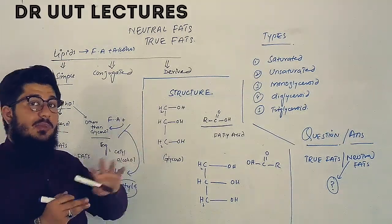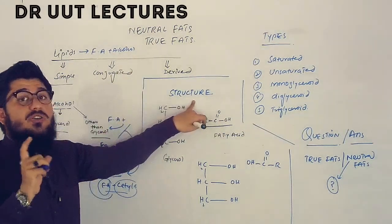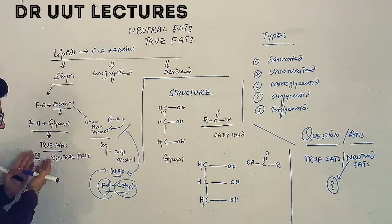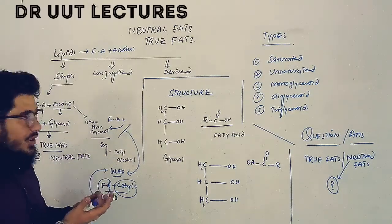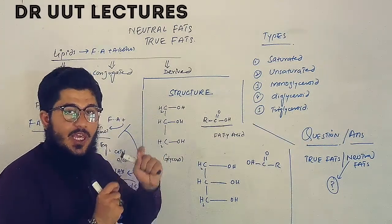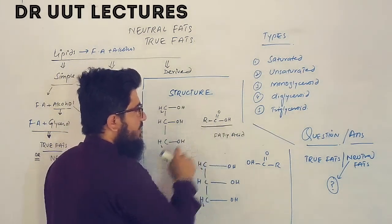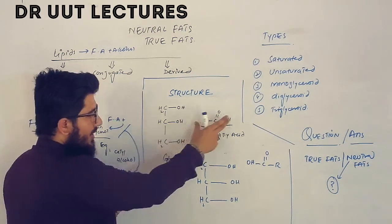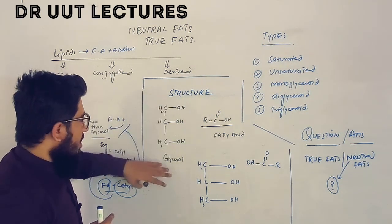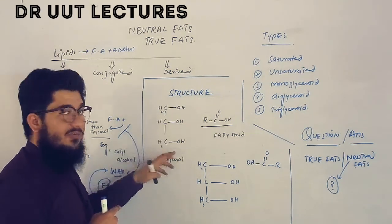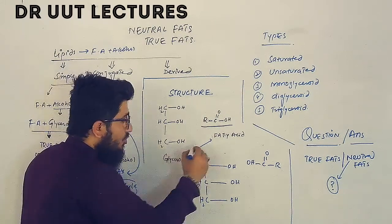Now let's look at the structure of neutral fats or true fats. True fats are formed from fatty acid and glycerol combining together. Chemically, a fatty acid looks like R–C(=O)–OH, where R is a long carbon chain. Glycerol is three carbons each attached to a hydroxyl functional group — three carbons with three hydroxyl groups. When glycerol combines with a fatty acid, they produce the true fats or neutral fats.